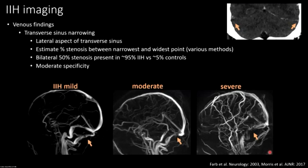Venous findings: transverse sinus narrowing refers to the lateral aspects of the transverse sinuses. On coronal CTV you just don't see the transverse sinuses — they smoothly taper down to slit-like things, and that's the stenosis we're looking for. I use the 50% rule: 95% of people with IIH will have 50% narrowing of the transverse sinuses at that lateral-most aspect compared to 5% of normal controls. I grade it as mild, moderate — getting pretty thin — and severe, where I kind of lose the vein in that segment.